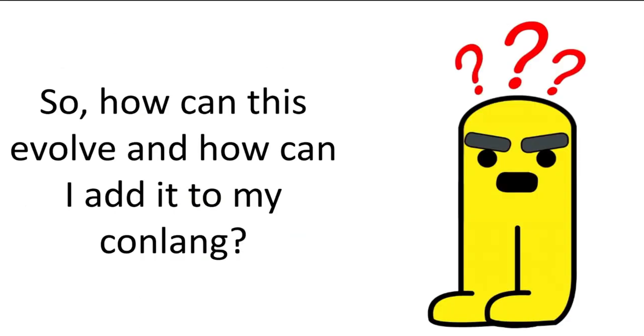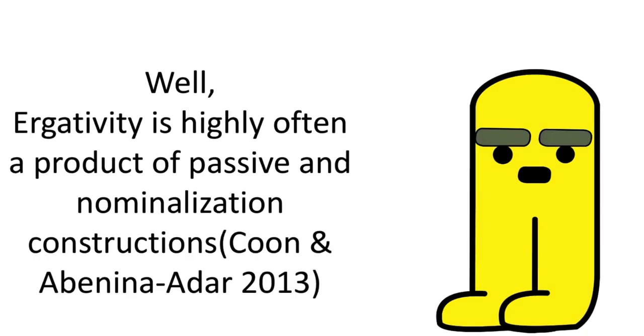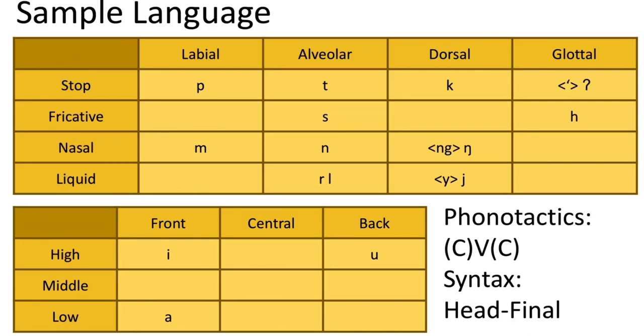Well, you may be asking, how can these systems evolve and come about in a conlang? Well, ergativity is highly often a product of passivization construction and nominalization constructions. Let's make a sample language with a fairly standard phonology, and let's say that this language will have a basic head-final syntax and a default word order of subject, object, verb.